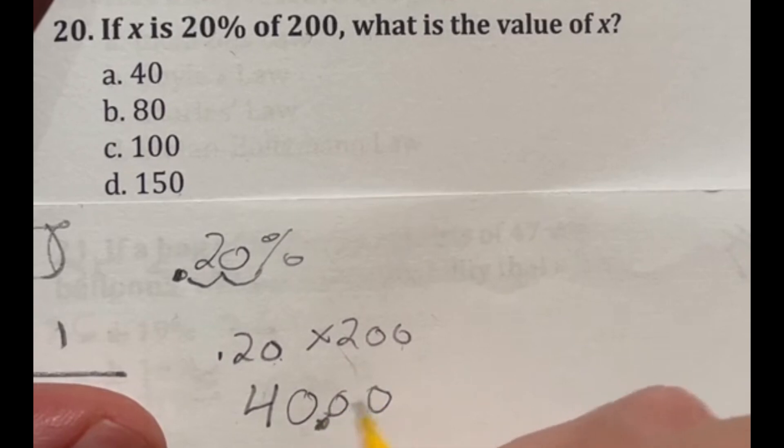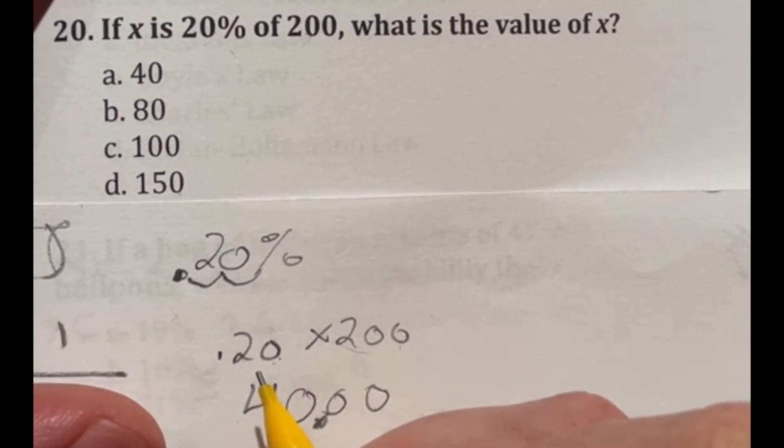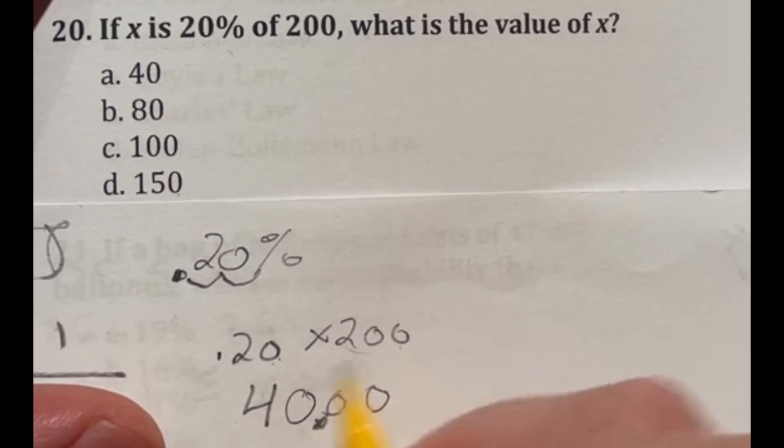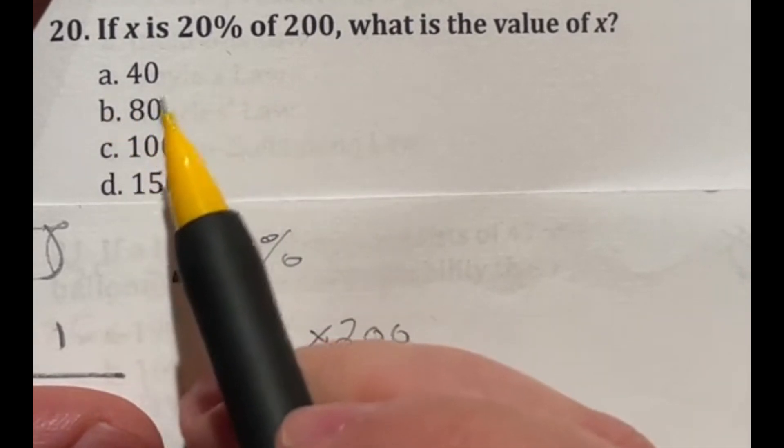But there are some other shortcuts you could have taken here as well, such as 10% of 200 would have been 20. And this is double that. So that would have given us 40. There's lots of different ways you could solve this question. But I wanted to show you the general way to find a percent of the whole. So our answer here is A.